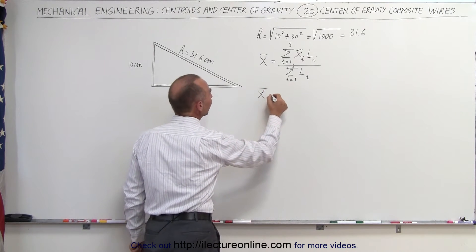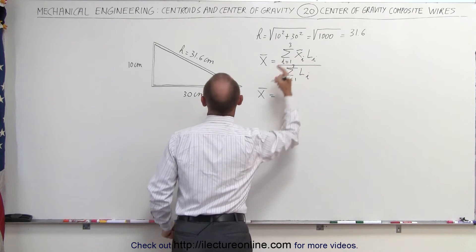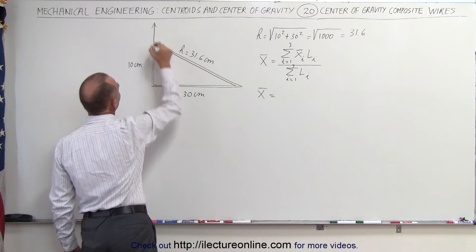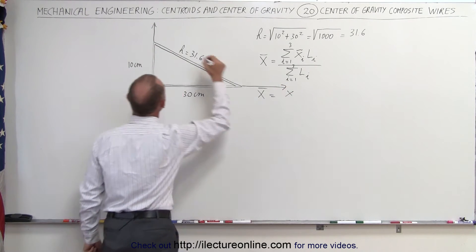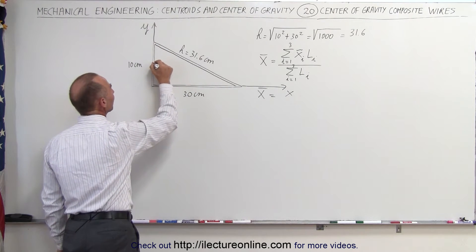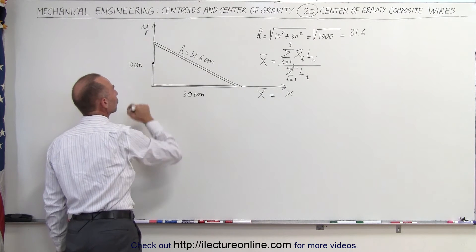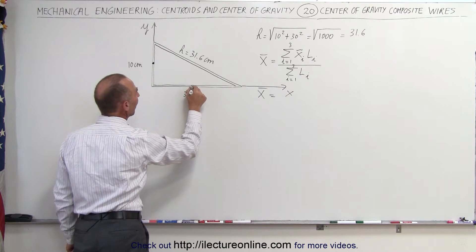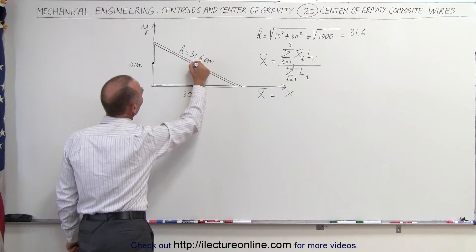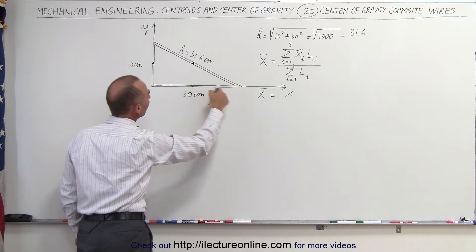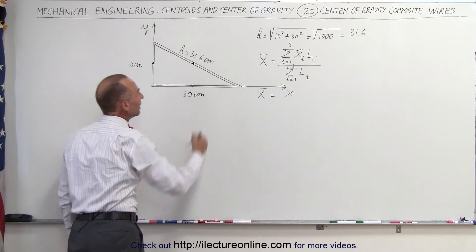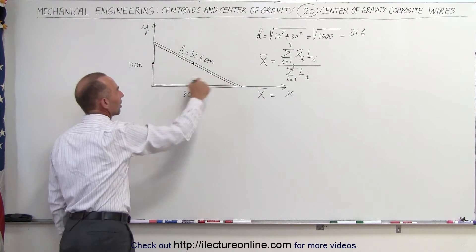To find the x-coordinate, we need a coordinate system. Let's place the y-axis here and the x-axis here — there's the origin, giving us a point of reference. The center of mass of the vertical wire is halfway along it; the center of mass of the horizontal wire is halfway along it; and the center of mass of the slanted wire is right above the center of the horizontal wire and at the same height as the midpoint of the vertical wire, though its length will be a bit longer.